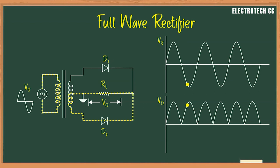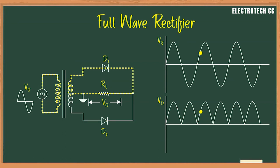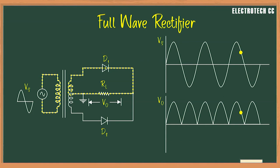In the negative half cycle, the output current flows through diode D2 and resistive load RL in the anticlockwise direction. The output voltage across RL is the input voltage of the negative half cycle but with opposite polarity, so the current through RL is in the same direction. That is why the output voltage across RL is in the positive direction only. The output is not a steady-state DC but only a pulsating DC wave having a ripple frequency equal to twice the input frequency.